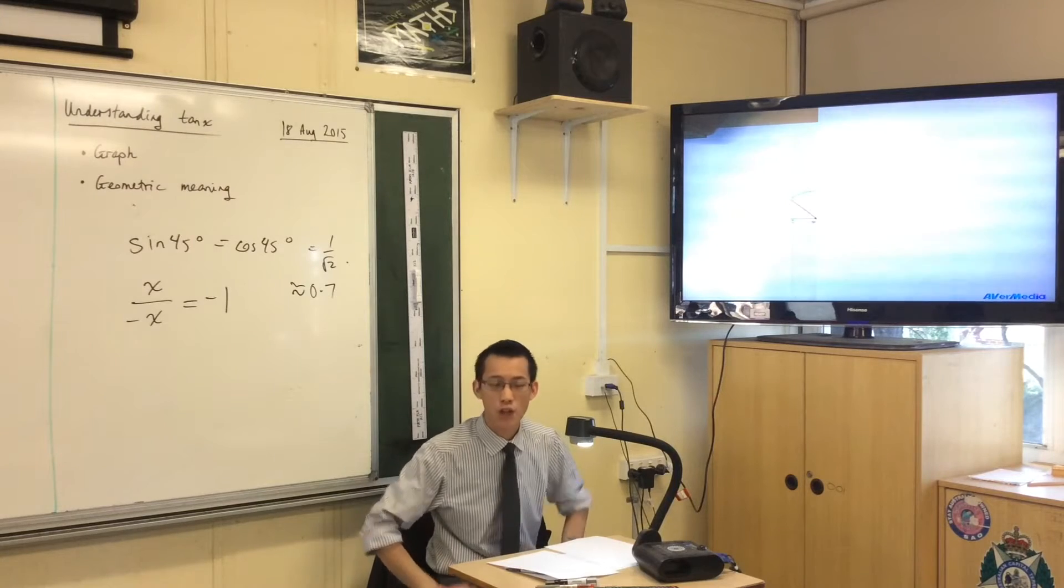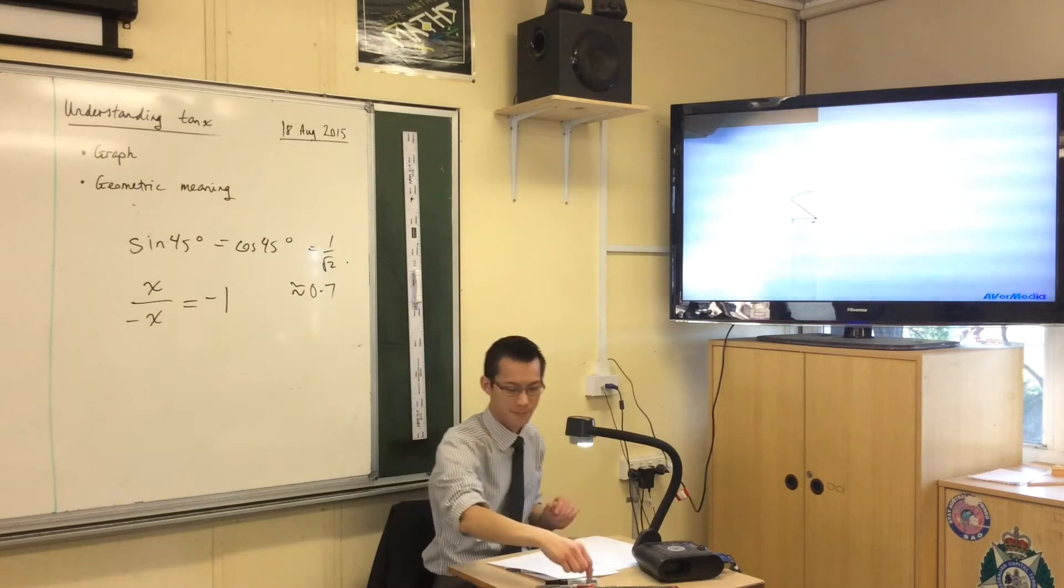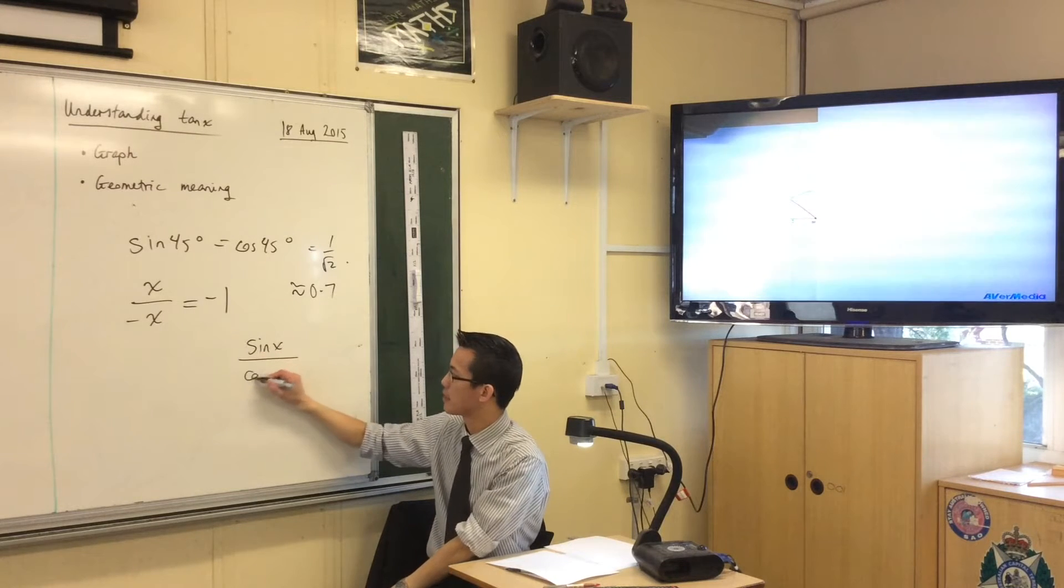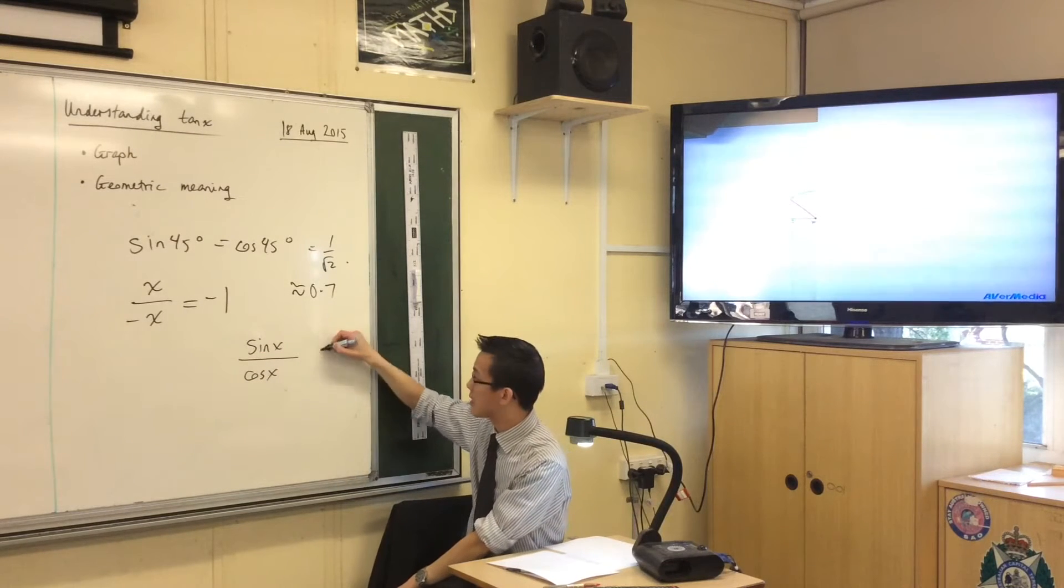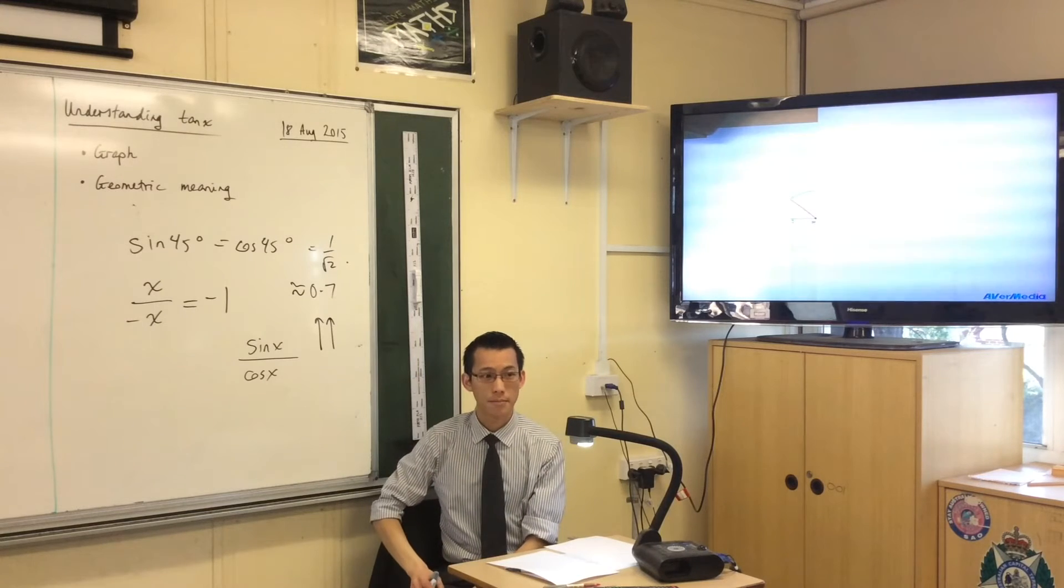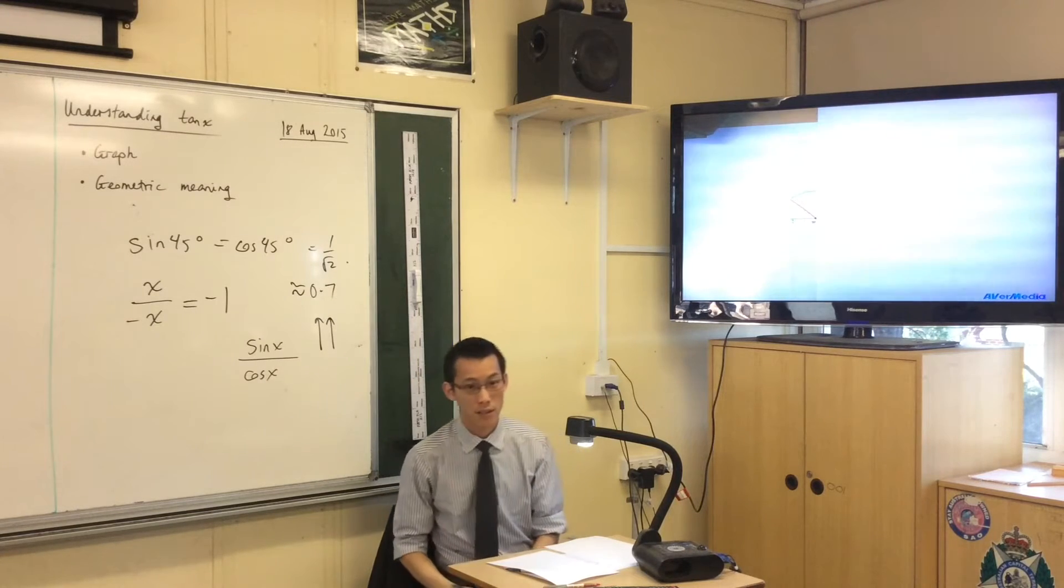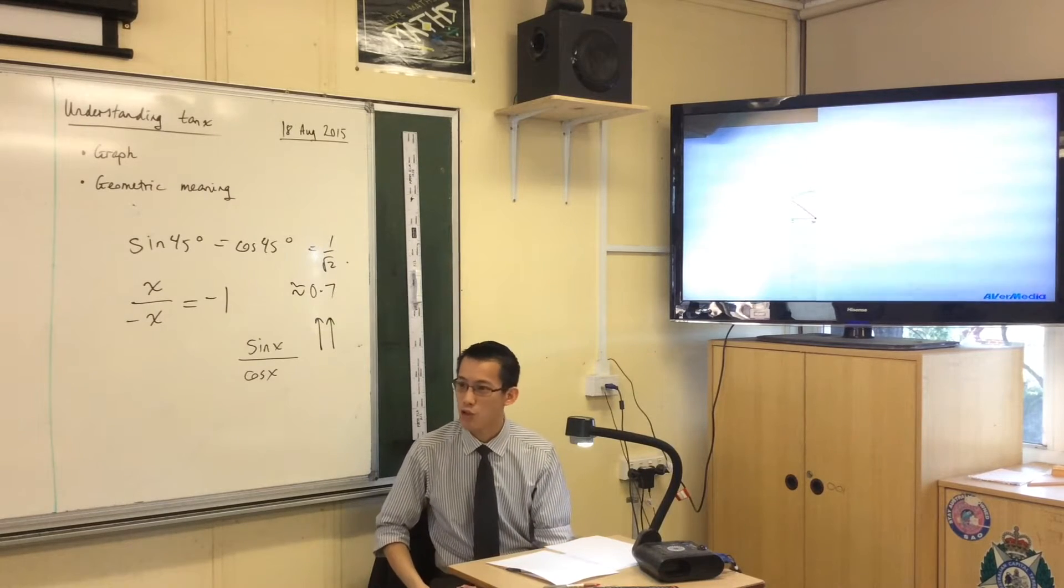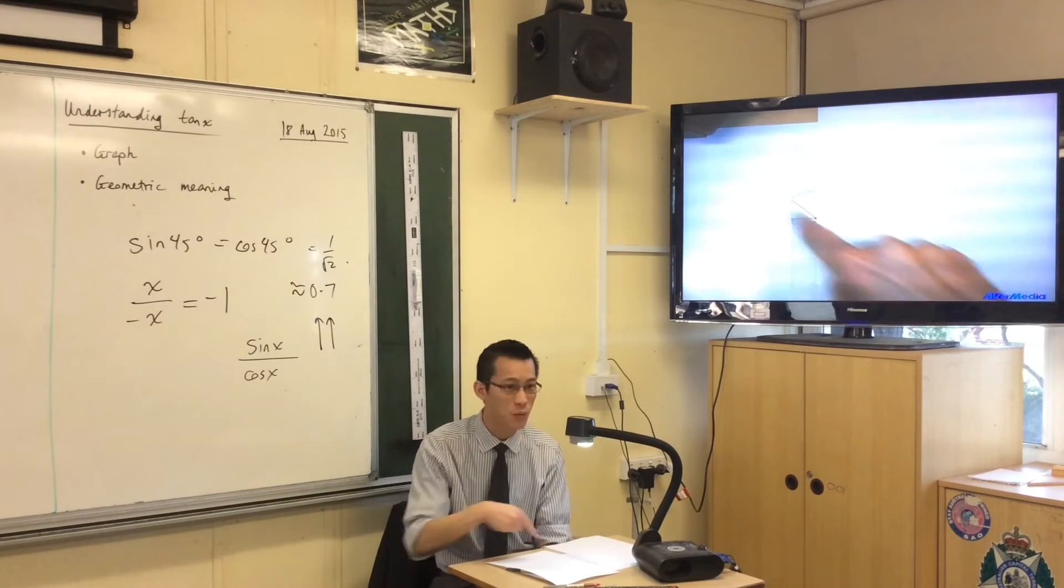So the numerator, that's the top - let's write this: sin x is the numerator and cos x is the denominator. Sin x is getting bigger. Have a look at the pink graph - that's cosine, the denominator. What's happening to that guy? He's dropping like a rock, going down towards zero. He's getting smaller and smaller and smaller.